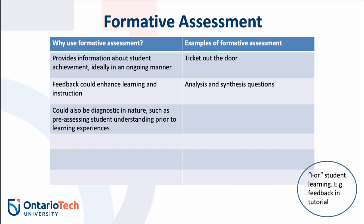Formative assessment provides information for the learner and facilitator about student achievement in an ongoing manner. For example, after a class discussion, students and the facilitator might provide and acquire feedback about a particular topic. The class discussion might reveal that some learners are still struggling with the concept. The facilitator or peers might provide additional prompts or clarification as feedback. The information gathered during the class discussion is used to enhance student learning rather than formally assess student achievement.